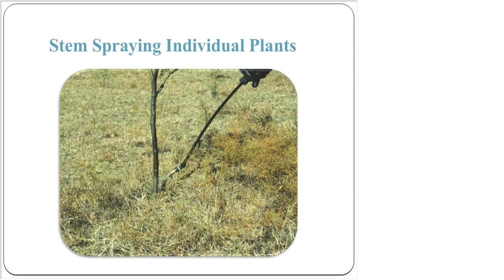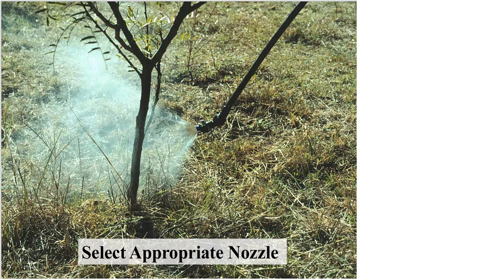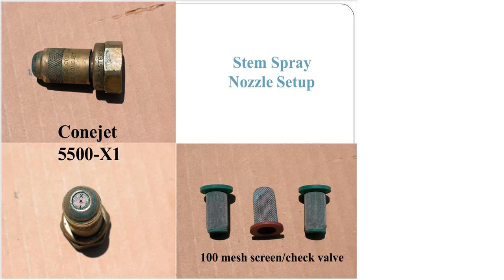Another technique is the stem spray, which I really promote for small, smooth-stemmed seedling trees that have come up. All you need to do is spray your mix about 12 inches high all the way around the stem down to the ground — there's no need to let it pool on the ground. For this technique, use a ConeJet X1 nozzle (or X2 if you're impatient), which has a much smaller hole and puts out more of a stream onto the stem to get it totally covered. Use a check valve especially since in this mixture we'll be using diesel, not water.